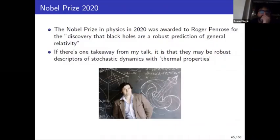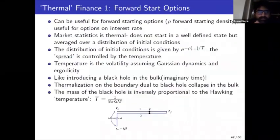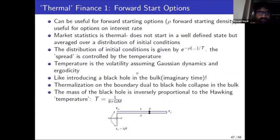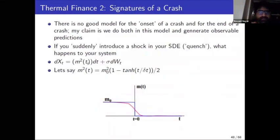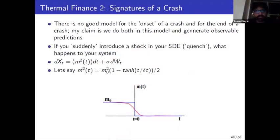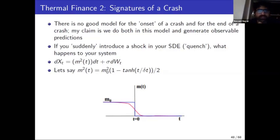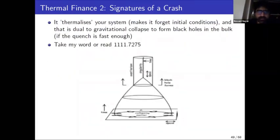The Nobel Prize in Physics in 2020 was awarded to Roger Penrose for the discovery that black holes are a robust prediction of general relativity. My claim is that there are also robust descriptions of stochastic dynamics with thermal properties — forward-starting options have these thermal properties because their initial statistics are averaged over a bunch of initial conditions. Crash dynamics can also be fully described by a black hole in the bulk.